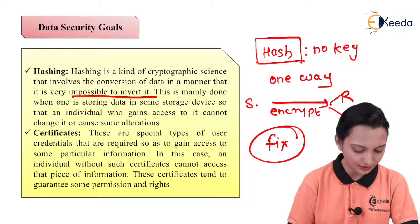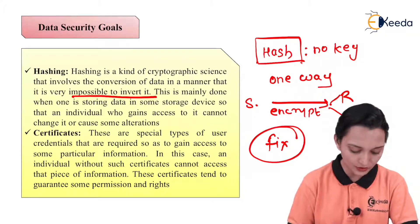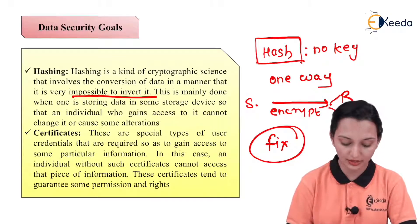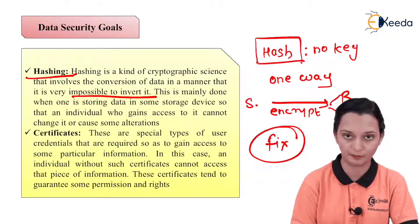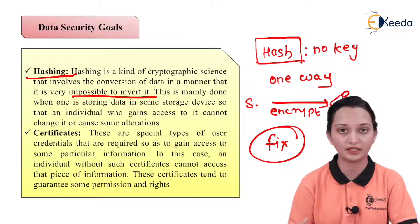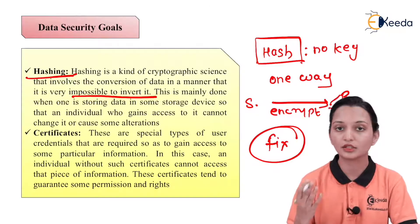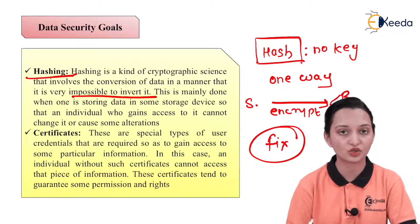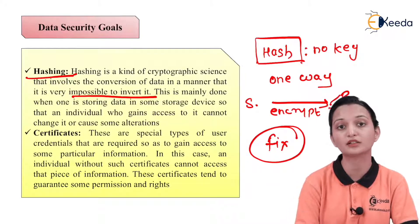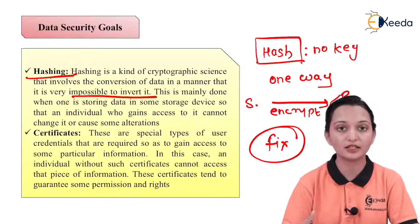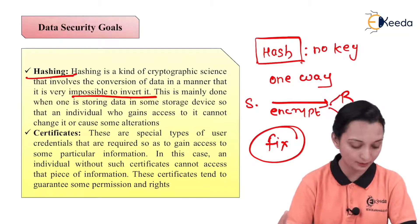Hashing is mainly done when one is storing the data in some storage device so that an individual who gains access to it cannot change it and cause some alteration. Even if I am the authorized user observing data sent by the sender with the help of hashing, I am not able to modify the data though I know it. If I want to modify the data to make the communication insecure, I am not able to do it either. That means much more precaution is taken — even an authorized receiver is not able to modify the data in their hand. This is an enhancement of security with the help of data security goals.